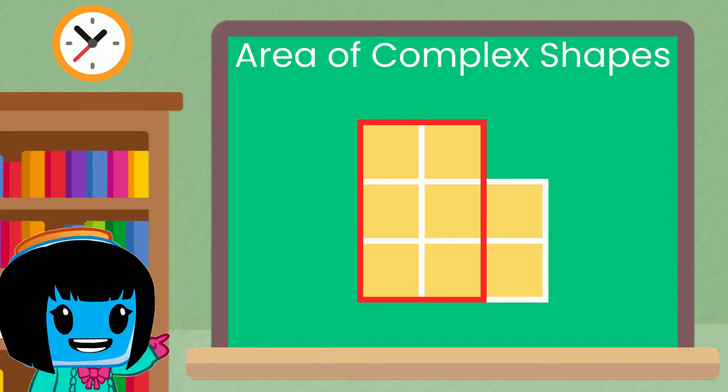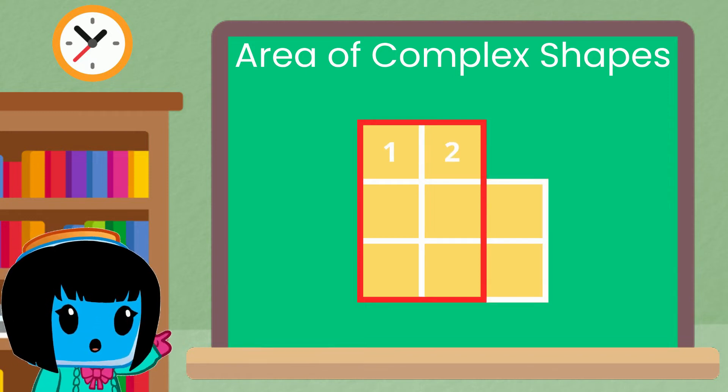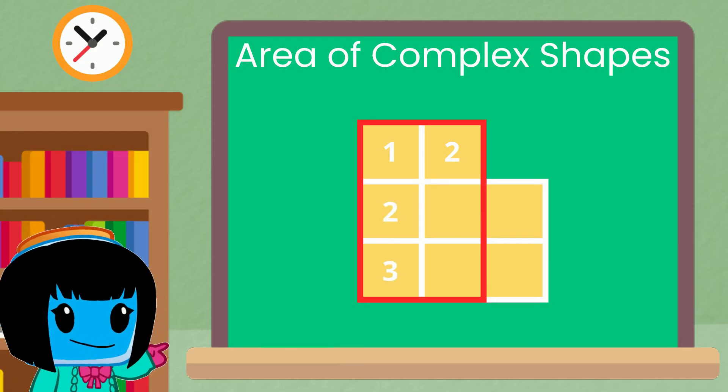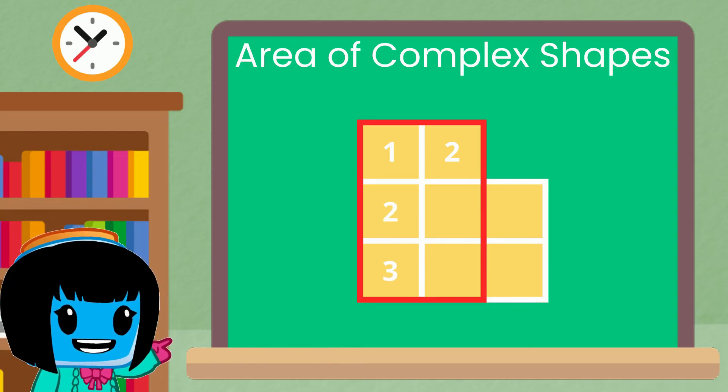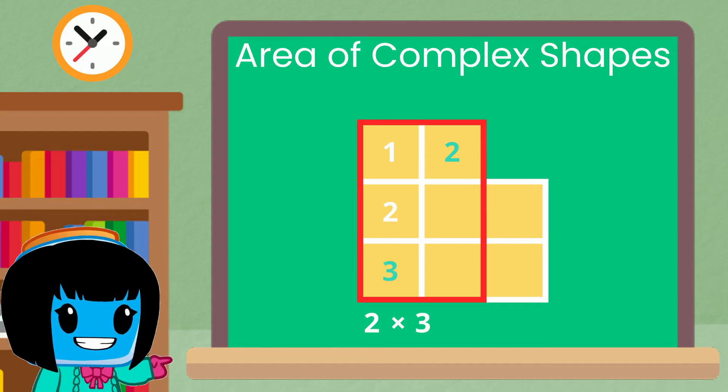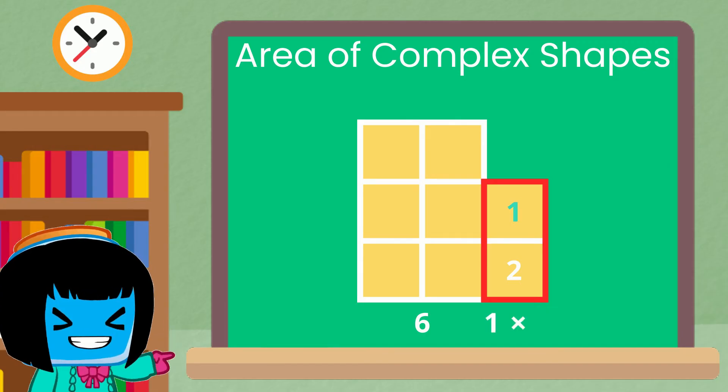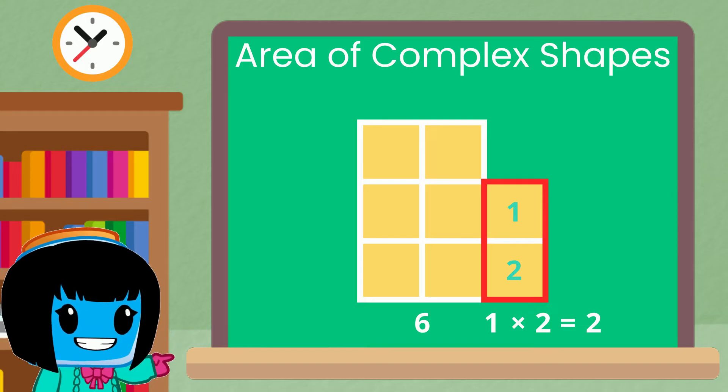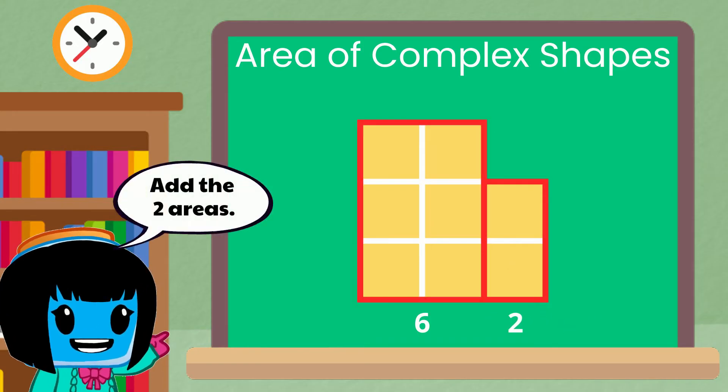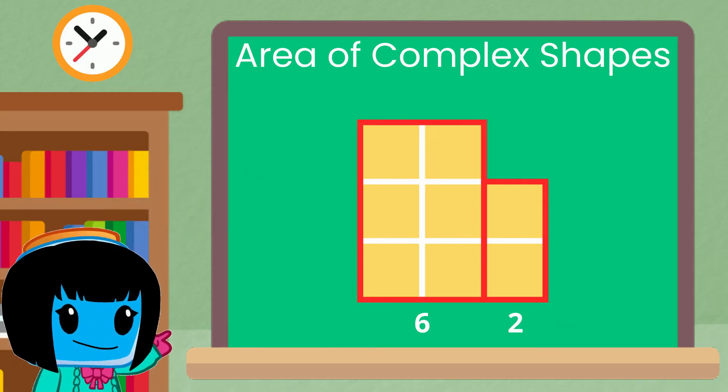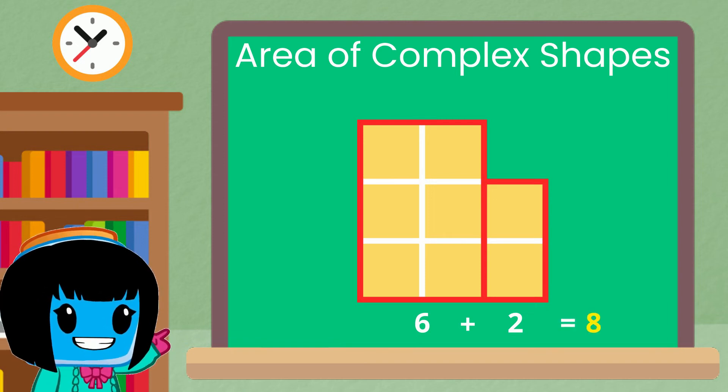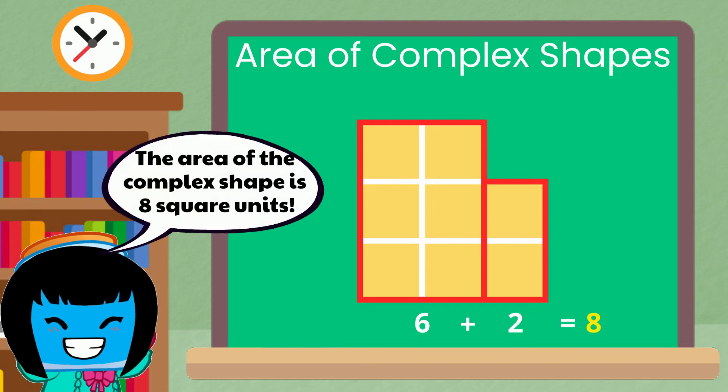Let's start with this rectangle. There are two squares across the top and three down the side. So the area is two times three which equals six square units. The other rectangle has one square across the top and two down the side. So its area is one times two equals two square units. Adding the two areas we have six plus two which equals eight square units. The area of the complex shape.